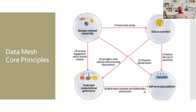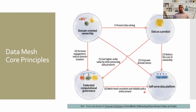If you look at Data Mesh core principles — this is a picture from Zhamak Dehghani's book, which I think you all must have read. It's a very nice book that gives you an insight about Data Mesh and how you can apply certain principles. It talks about domain-driven ownership, which tries to reduce isolation where each domain is responsible for their own data. It talks about data as a product — where you don't treat data as a byproduct of the ETL process, but it's more about adding more information to your data.